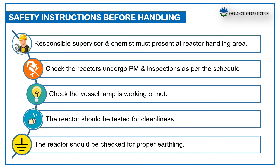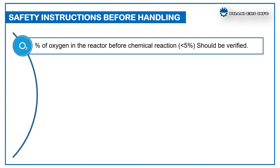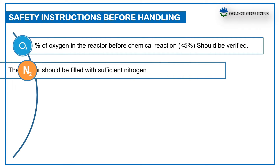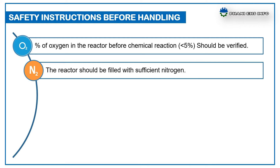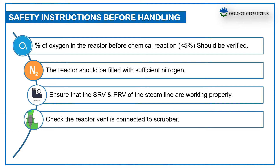The percentage of oxygen in the reactor before chemical reaction should be verified. The reactor should be filled with sufficient nitrogen. Ensure that the safety valve and pressure reducing station of the steam line containing the reactor jacket are working properly. Check that the reactor vents are connected to the scrubber.